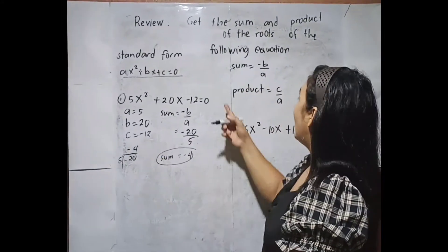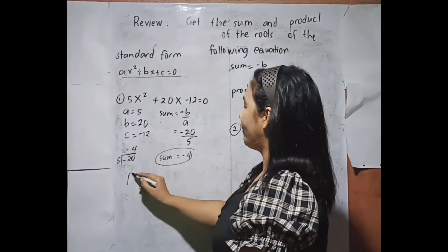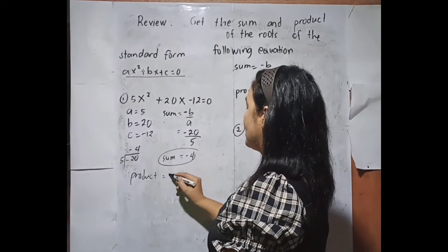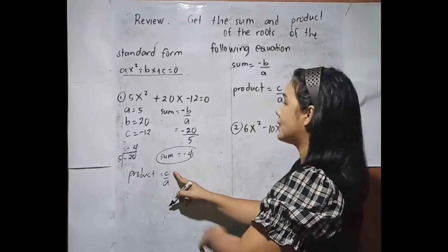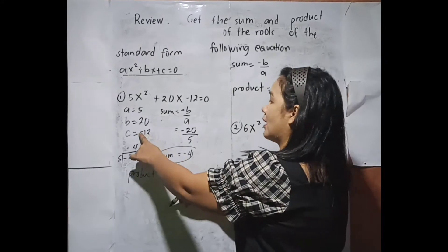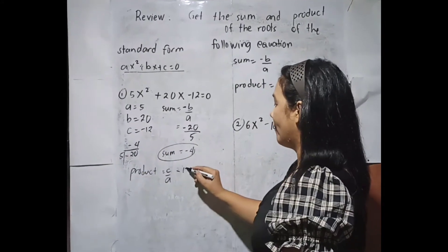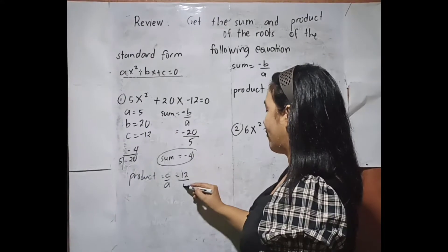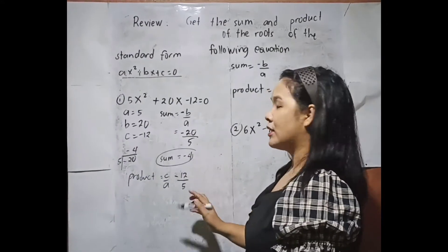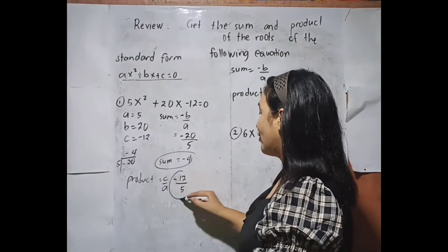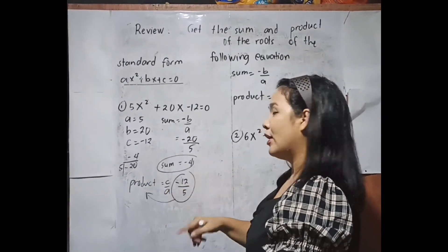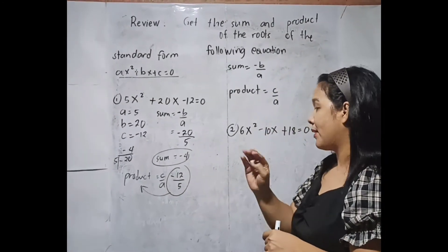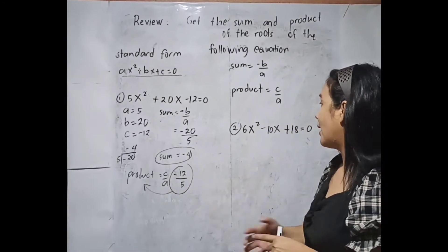Next, our product: c over a. Ang ating c is negative 12, and our a is 5. So the product is negative 12 over 5. You cannot simplify it to lowest terms because that is already the simplest form.